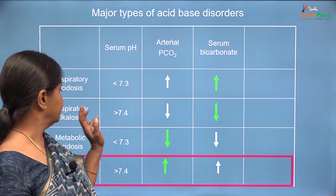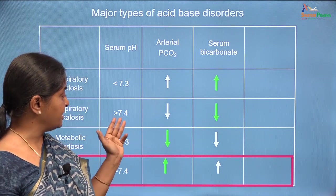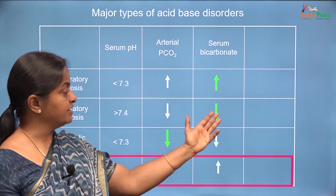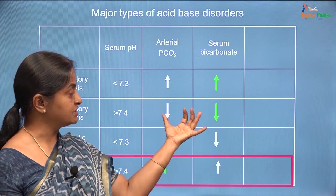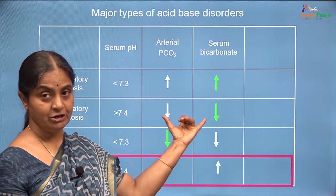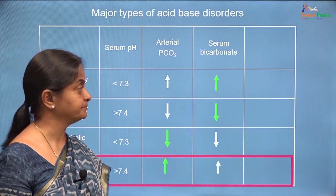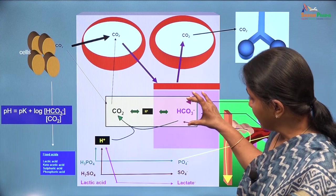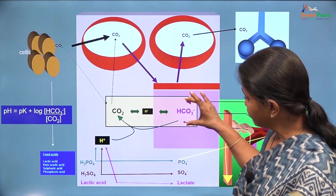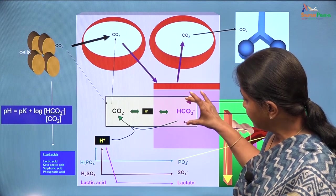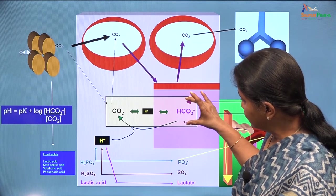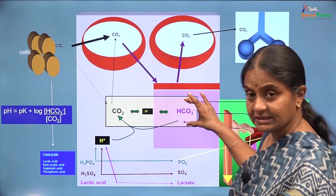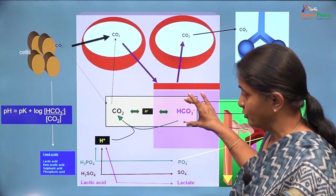In respiratory alkalosis, the pH is high but these two parameters — bicarbonate and carbon dioxide — are lower than normal. So metabolic alkalosis is primarily a condition where serum bicarbonate is higher than normal.